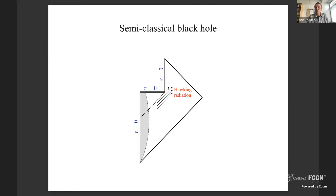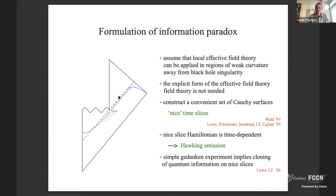By the end, once the black hole has evaporated, we will have either empty Minkowski space or possibly the world line of a small remnant. This is a semi-classical description, and one thinks about doing effective field theory on this background.